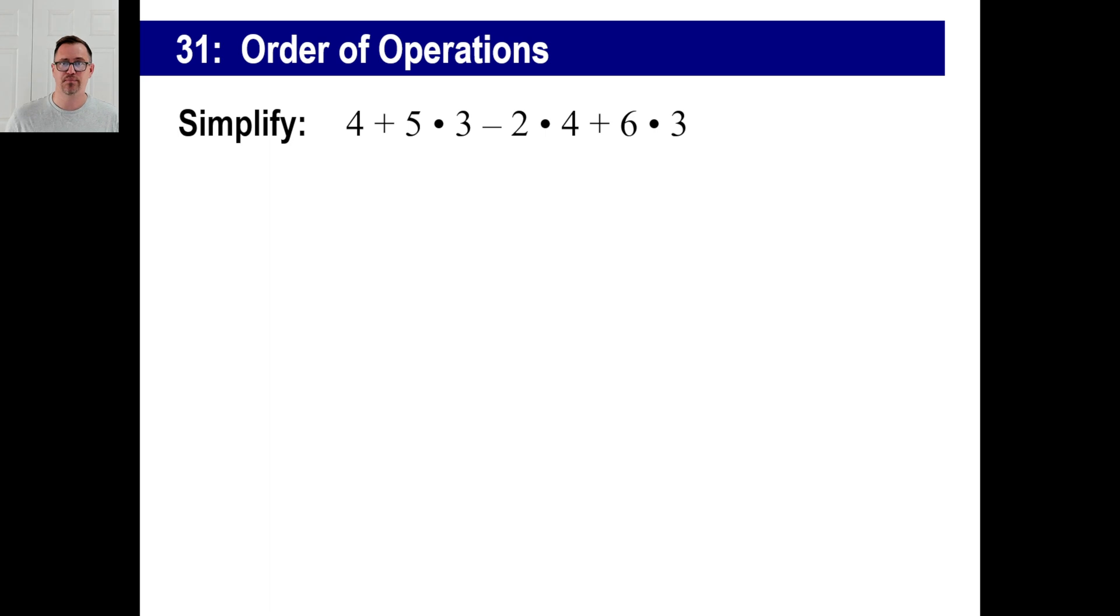Let's try another one. Go ahead and write this down. Pause it. Same thing. Look at this. We should just do this for the heck of it. 4 + 5, this is wrong, by the way. 4 + 5 is 9. 9 × 3 is 27. That's 25. × 4 is 100. + 6 is 106.